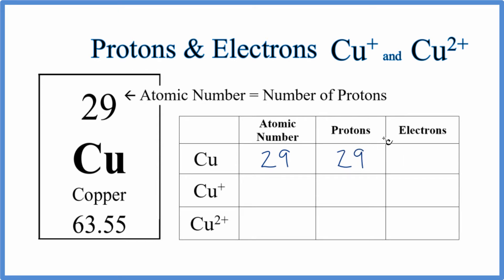And with ions, the only thing that changes is the number of electrons. The protons, the atomic number, it doesn't change. Copper is always going to be 29, whether it's neutral or an ion. So we have an atomic number of 29, and the protons will be 29 as well for copper and its ions.